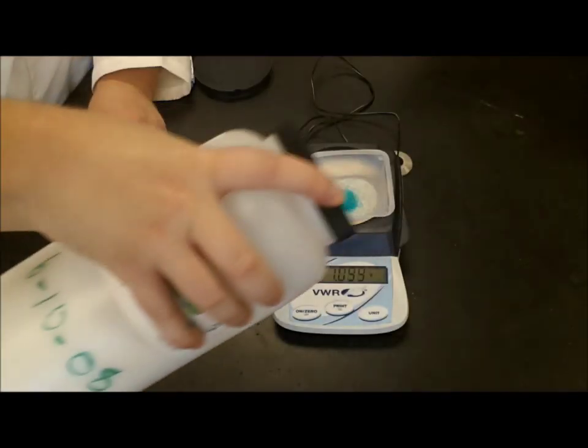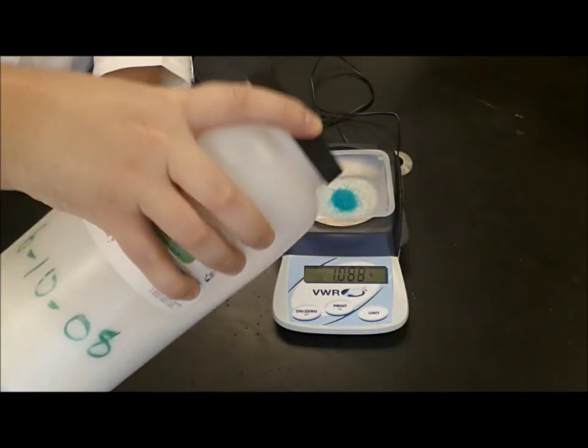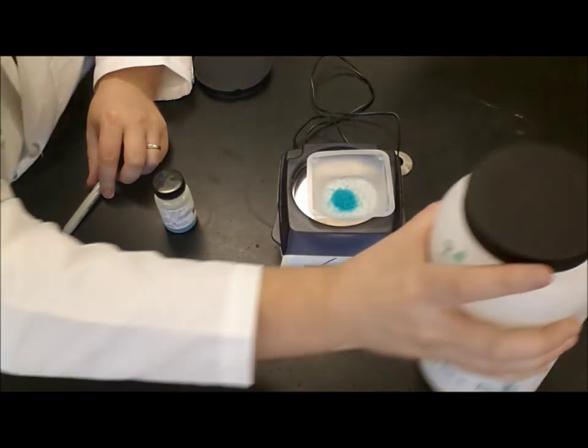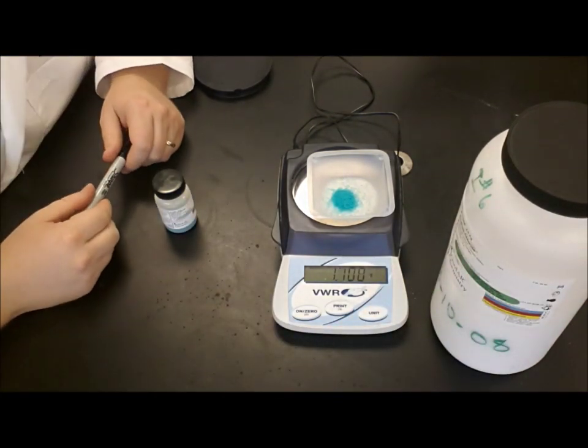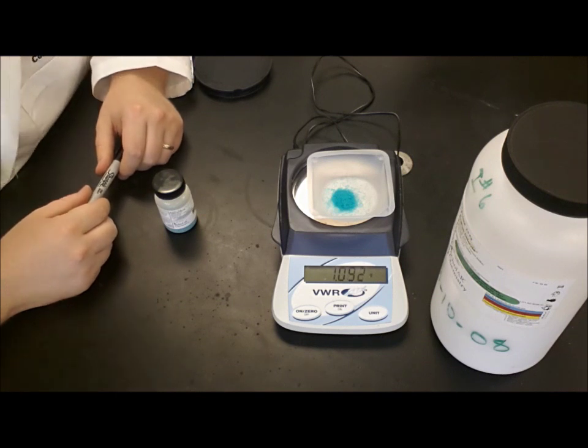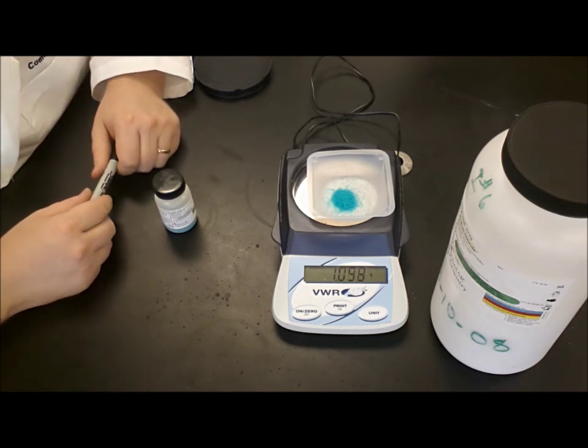So it's better just to forego the spatula entirely if it's possible. Now for something like giant bottle of sodium chloride, this is not possible. This is not realistic because the container is two and a half kilograms. It's just too heavy for you to pick up and tap. So in that case, we would definitely want to use the spatula.